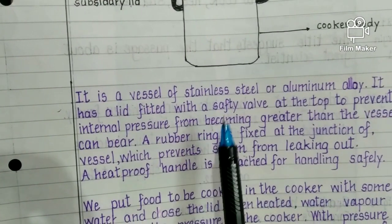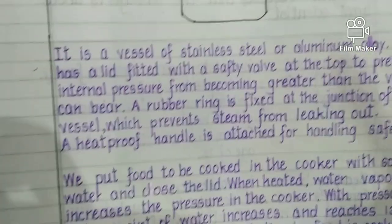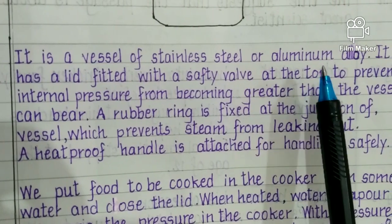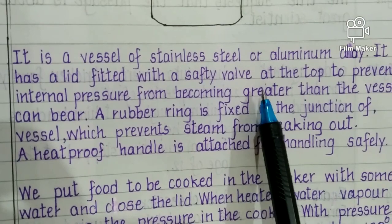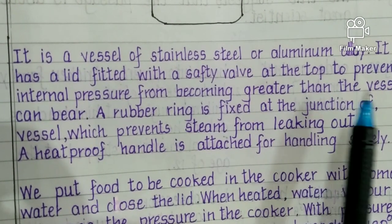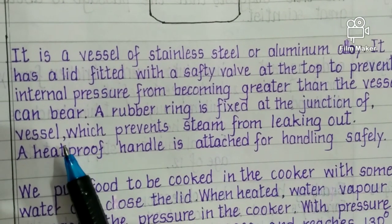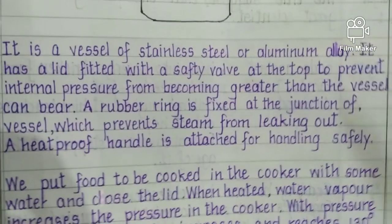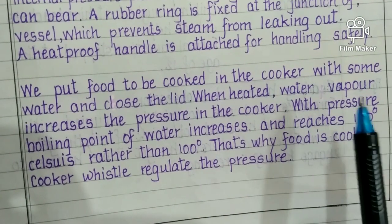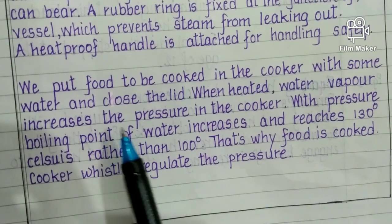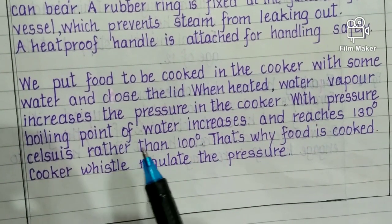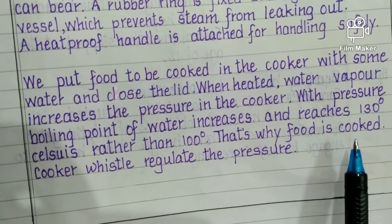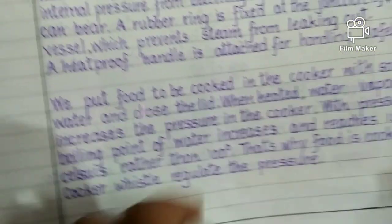The pressure cooker is a vessel of stainless steel or aluminium alloy. It has a lid fitted with a safety valve to prevent internal pressure from exceeding what the vessel can bear. A rubber ring prevents steam from leaking. When heated, water vapor increases pressure so that the boiling point reaches 130°C rather than 100°C, and this is how food is cooked faster. The whistle regulates the pressure.